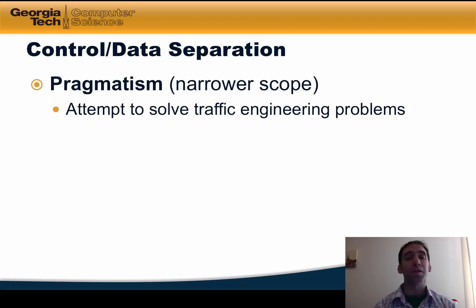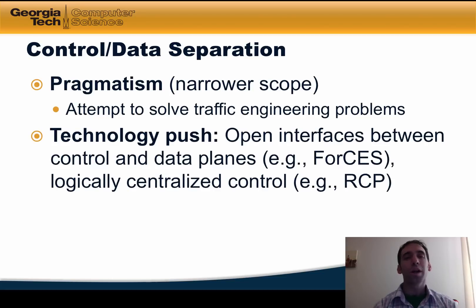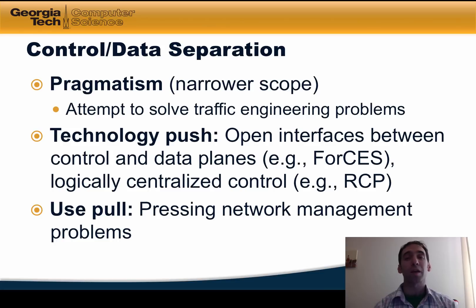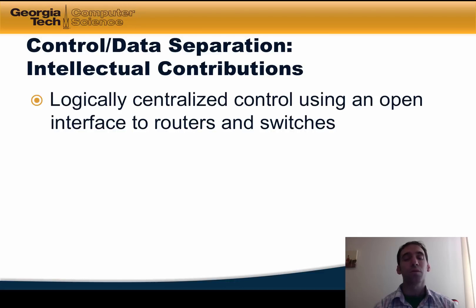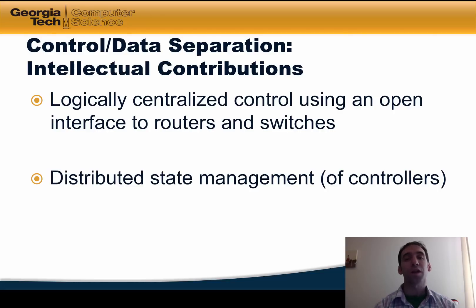Technologies that explored separating the control and data plane took a shift towards pragmatism, attempting to provide programmability but tackling it in the context of a much narrower scope of network management problems such as traffic engineering. Working groups in the IETF, such as ForCES, developed open interfaces between control and data planes, and other researchers developed technologies for logically centralized control, such as the routing control platform. Many network operators had pressing network management problems to be solved, and many of the initial architectures tackled a very specific network management problem. Control and data plane separation offered two important intellectual contributions: the notion of logically centralized control using an open interface to routers and switches, and technologies and algorithms for achieving distributed state management across a distributed set of network controllers.